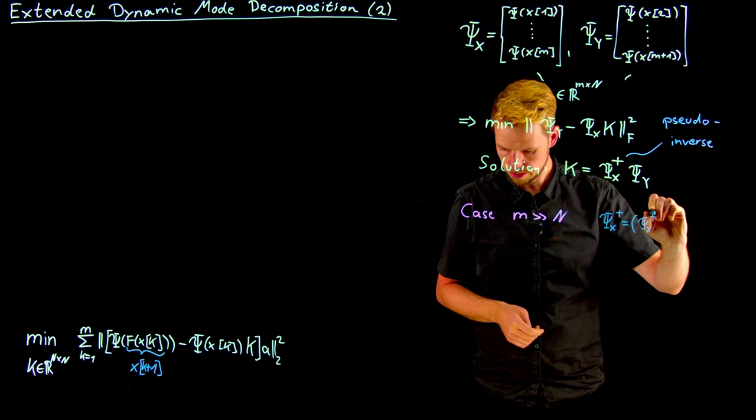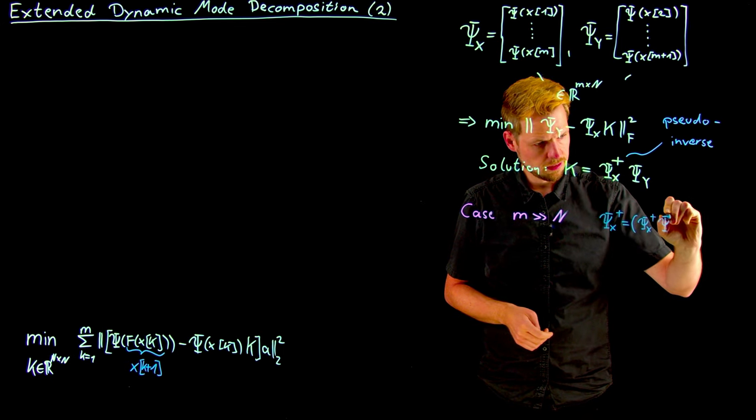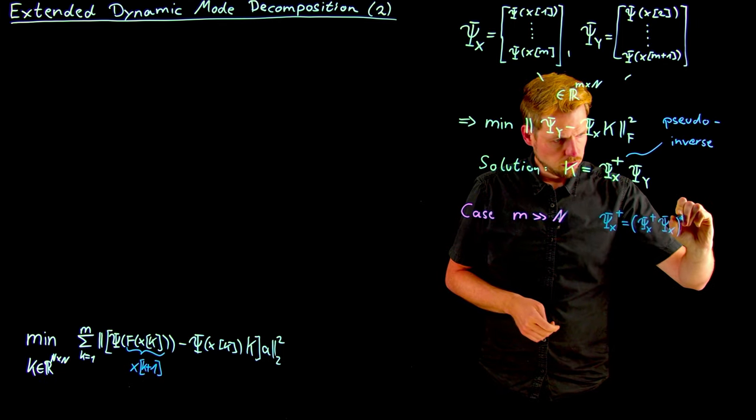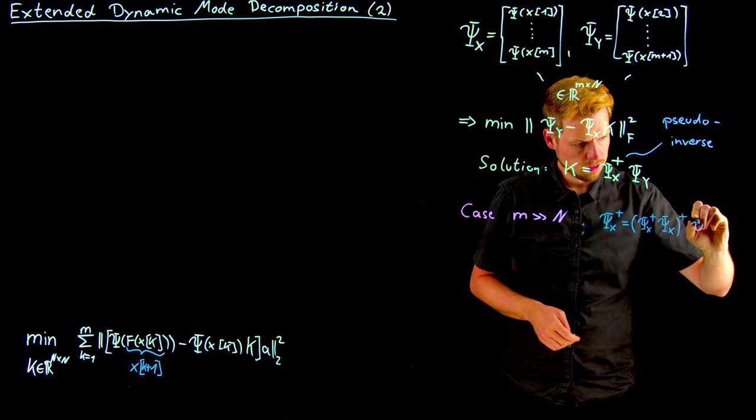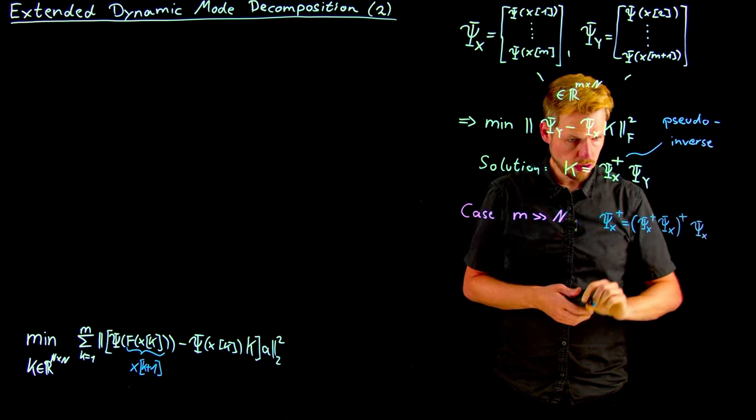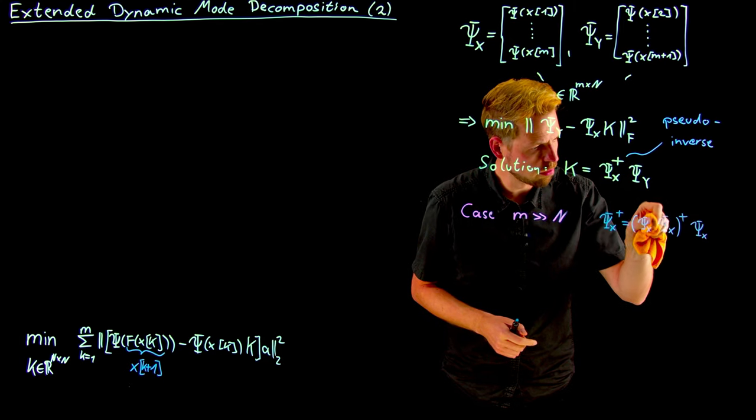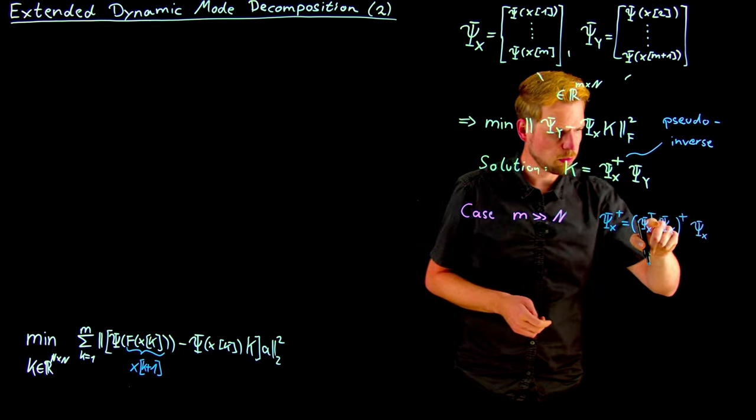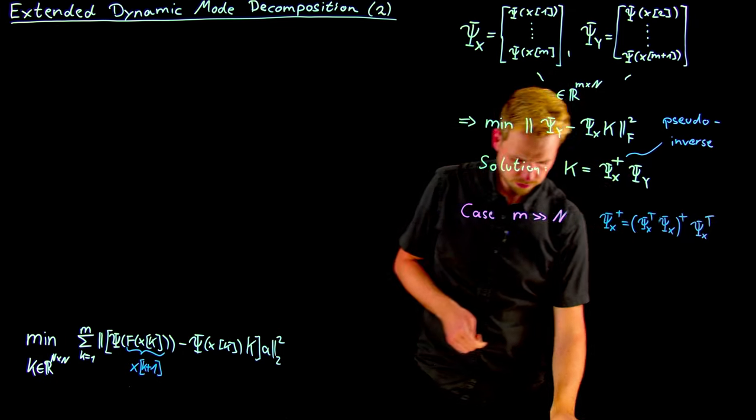So what we will use is an expression for the pseudoinverse that the following identity holds, which is psi x plus. Again, pseudoinverse, so the plus is always the pseudoinverse. Oh, excuse me, I've made a mistake here, couldn't read my own handwriting. This is a transpose here. So psi x transpose psi x pseudoinverse times psi x transposed.